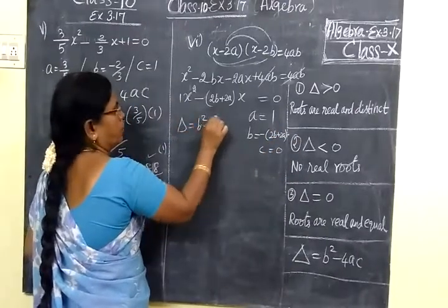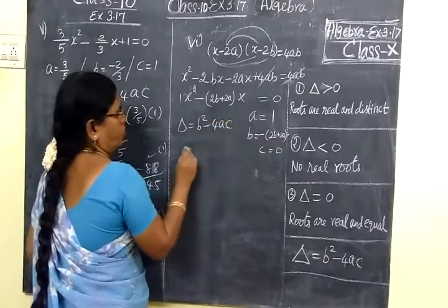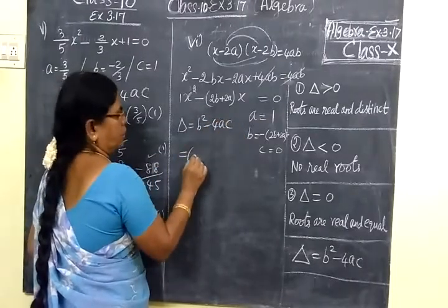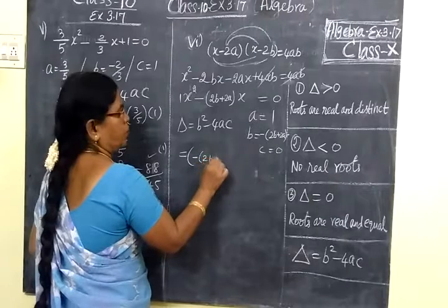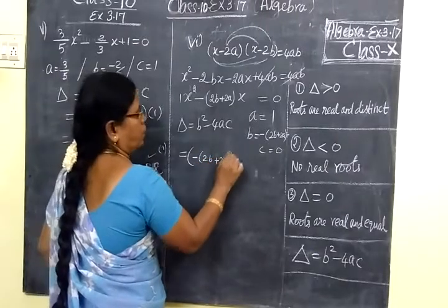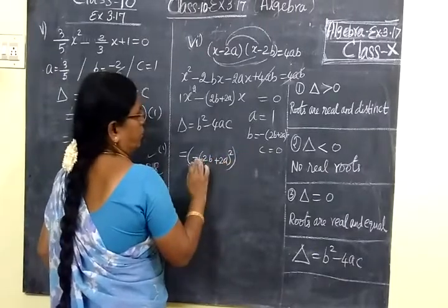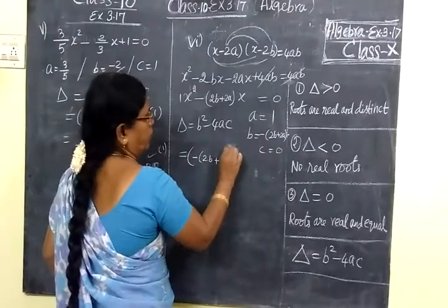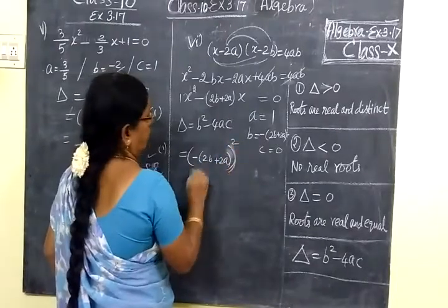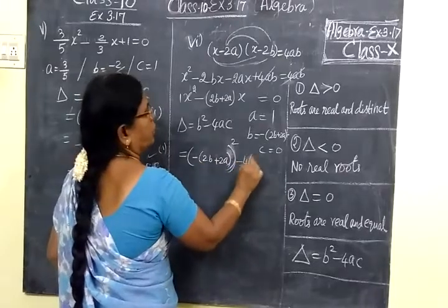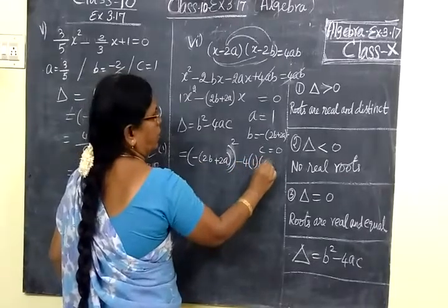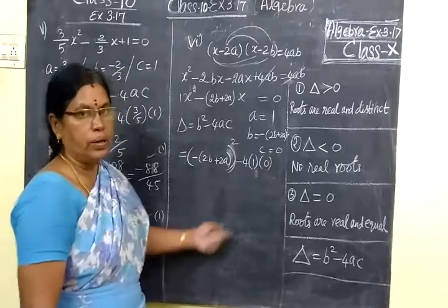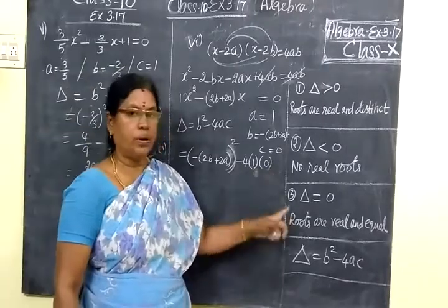So delta equals b² minus 4ac. That equals (-2b+2a)² minus 4 times a which is 1, times c which is 0. So 0 times anything is 0.